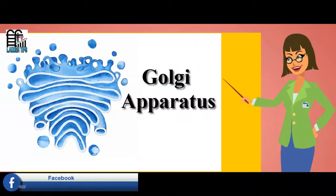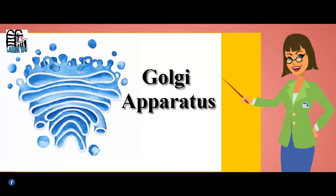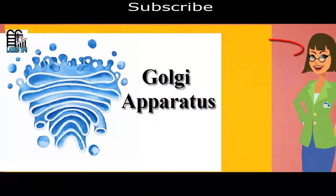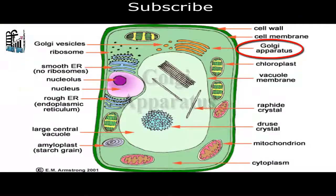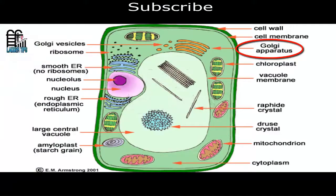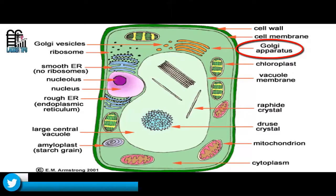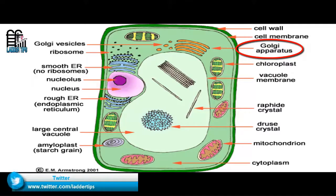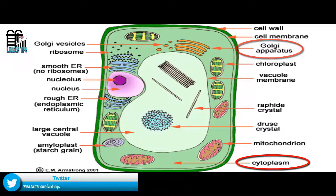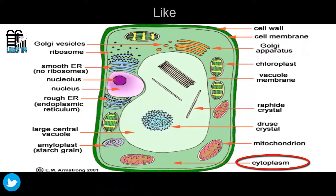The Golgi Apparatus can be found in the cytoplasm of both plant and animal cells. Cytoplasm is the intracellular fluid that fills cells.